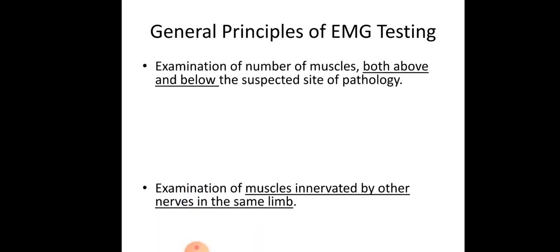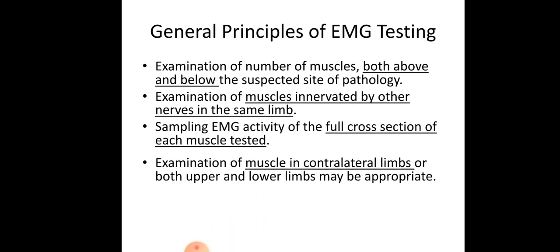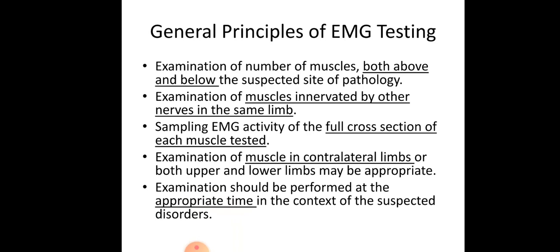For general principles of EMG testing — just as electrotherapy modalities like ultrasound, IFT, and TENS have usage principles, so does EMG. First, examination of the number of muscles: if assessing biceps brachii, we must also examine brachioradialis below it and scapular muscles such as deltoid or trapezius above it, to suspect any pathology. If the root cause is actually in the upper trapezius rather than biceps brachii, we must assess both muscles above and below the suspected pathology.